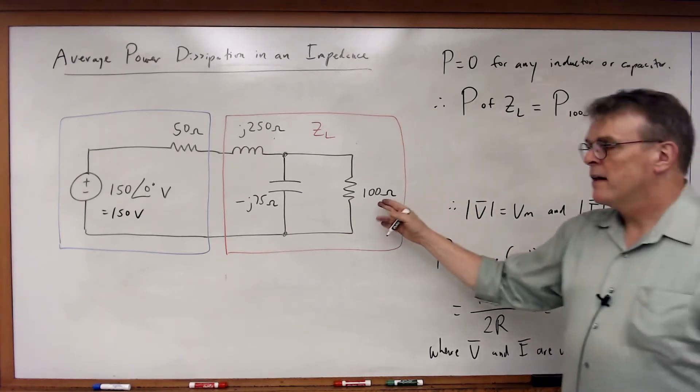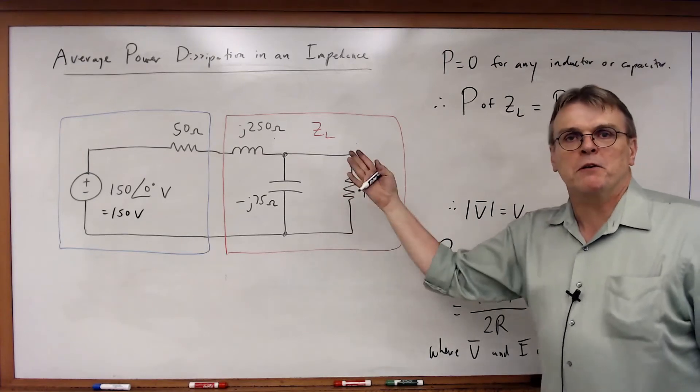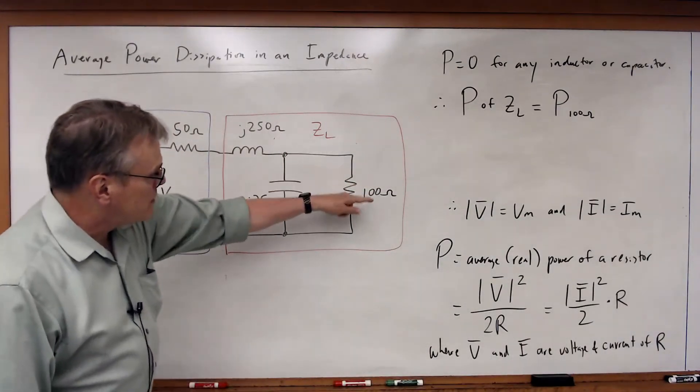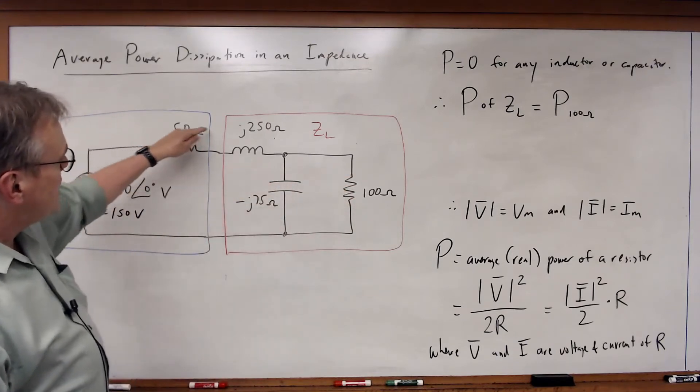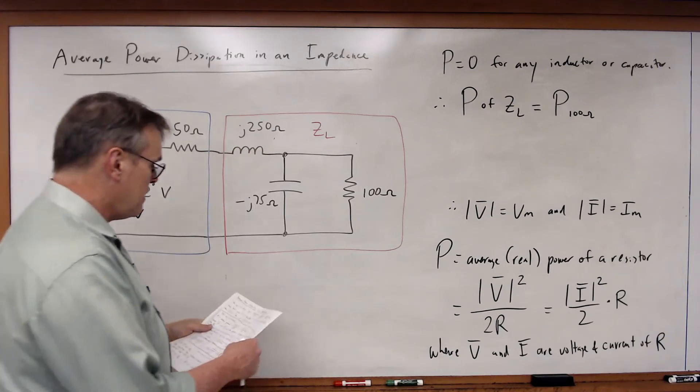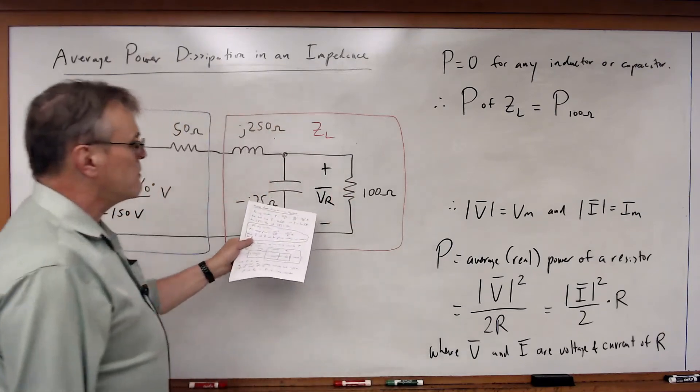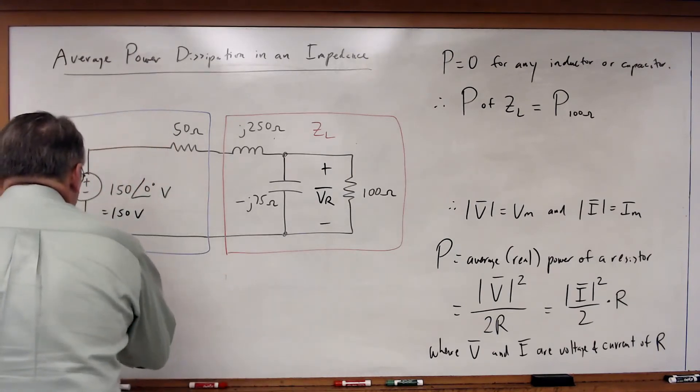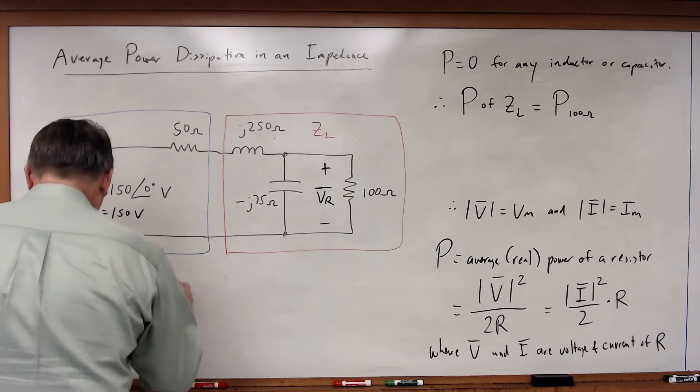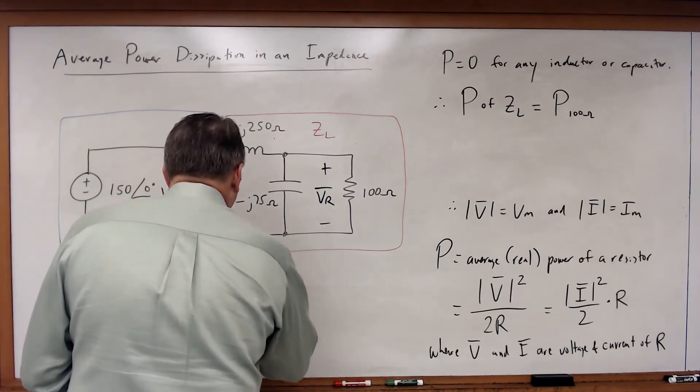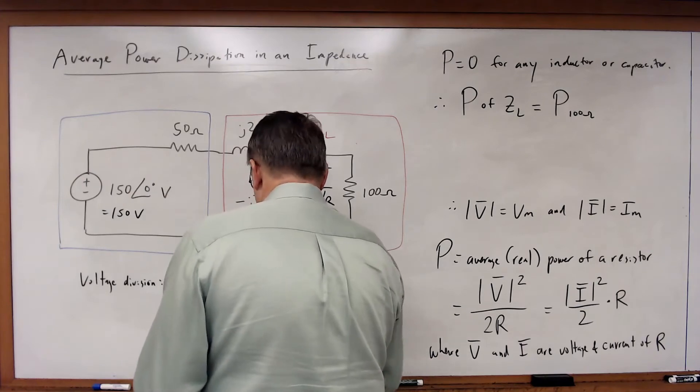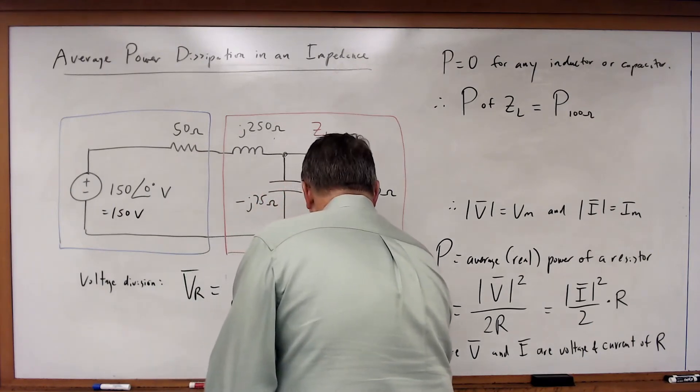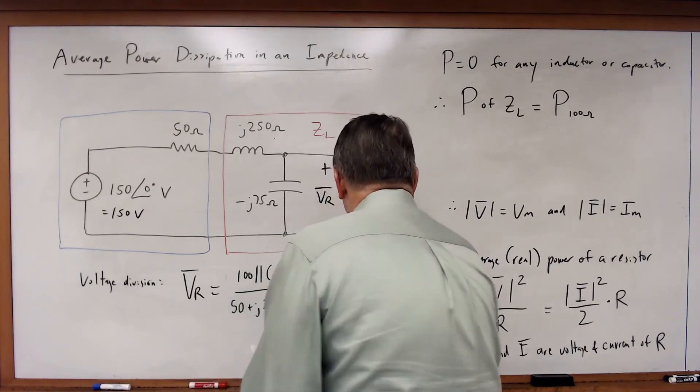Let's calculate the voltage and current associated with this resistor using standard phasor analysis. I have two impedances in parallel and these two impedances I can combine in series. I can calculate VR, the voltage phasor across that resistor, just by using voltage division. So VR will be equal to 100 in parallel with minus J75 divided by 50 plus J250 plus 100 in parallel with minus J75, multiplied times 150.